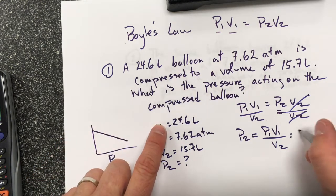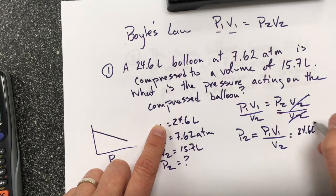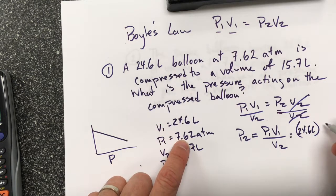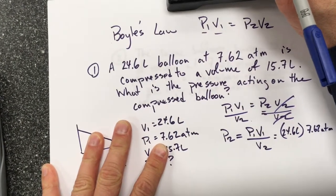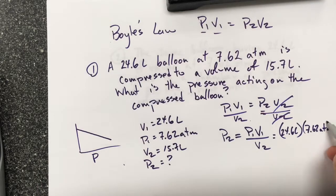And I get my P1 is 24.6 liters times 7.62 atm. I'm starting to lose you on the page here, sorry. And divided by 15.7 atm, or 15.7 liters.